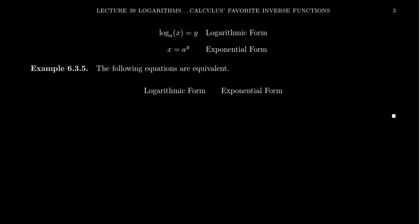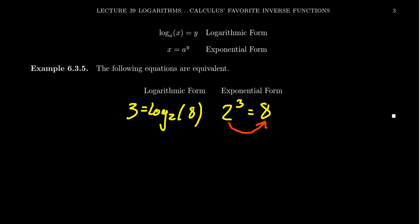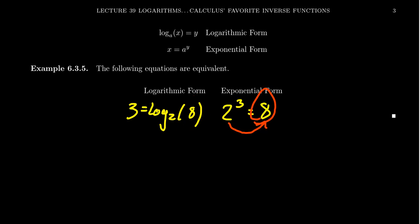Imagine we have the exponential statement two cubed equals eight. Maybe we want to move base two to the other side of the equation. If we do that, the corresponding logarithmic form looks like three equals log base two of eight. Notice that the base two moves to the other side: it started on the left-hand side and moves to the right-hand side. The three stays on the left-hand side, and the eight stays on the right-hand side. It's the base two that moves from the left over to the right.